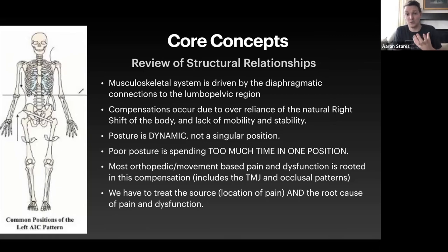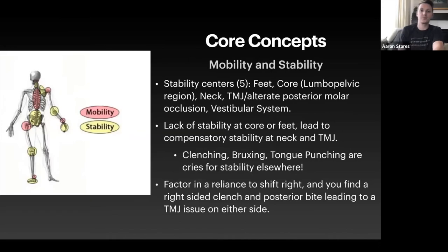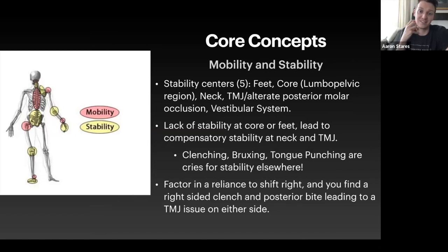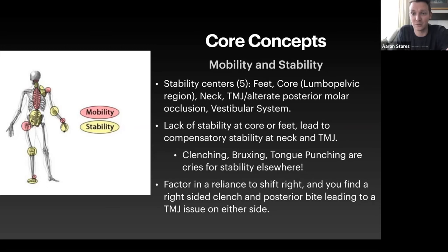We have five stability centers: the feet, the core, the neck, the TMJ, and the vestibular system. We need to figure out how to disperse stability throughout the body so we're not over-reliant on masseteric, temporalis, or SCM compensations. Resolving that will get rid of TMJ pain and improve function of opening, lateral protrusion, protrusion, and bite angles — before we even look at teeth. Clenching, bruxing, and tongue punching are all cries for stability elsewhere. If we've learned to do that from an early age, 20 to 30 years down the line when we see a new dentist, our arch may look terrible because of that lack of stability.